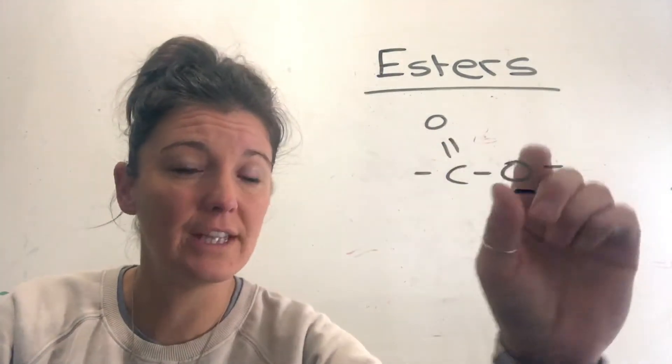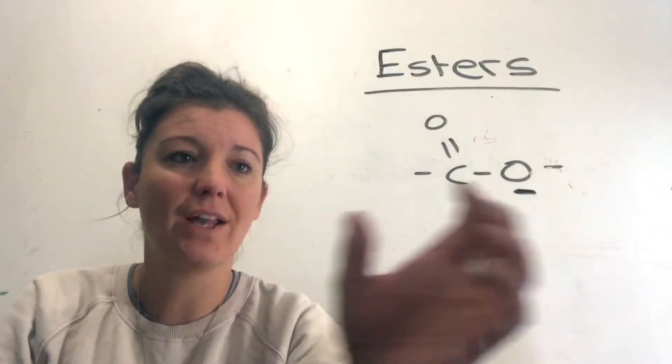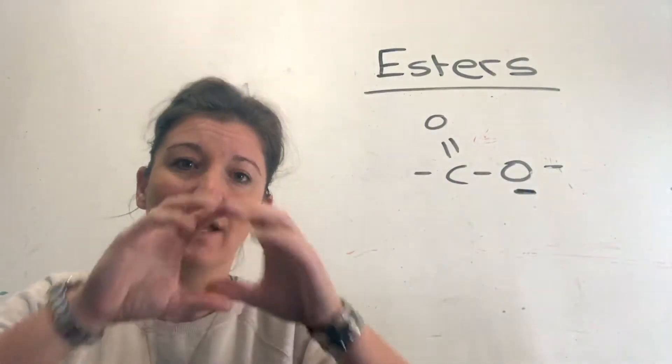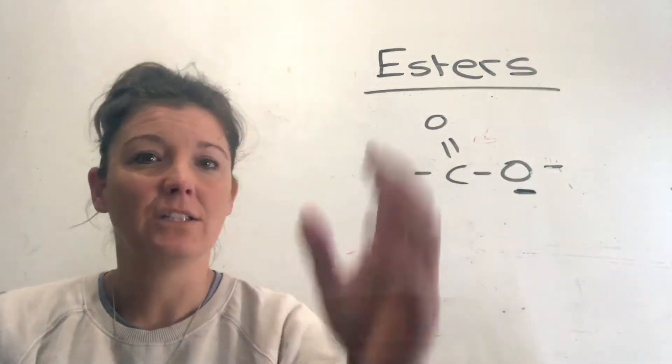The O, this is the ester bond, and the ester bond is kind of like joining the alcohol side and the carboxylic acid side together to make one big long molecule, and that is called an ester.